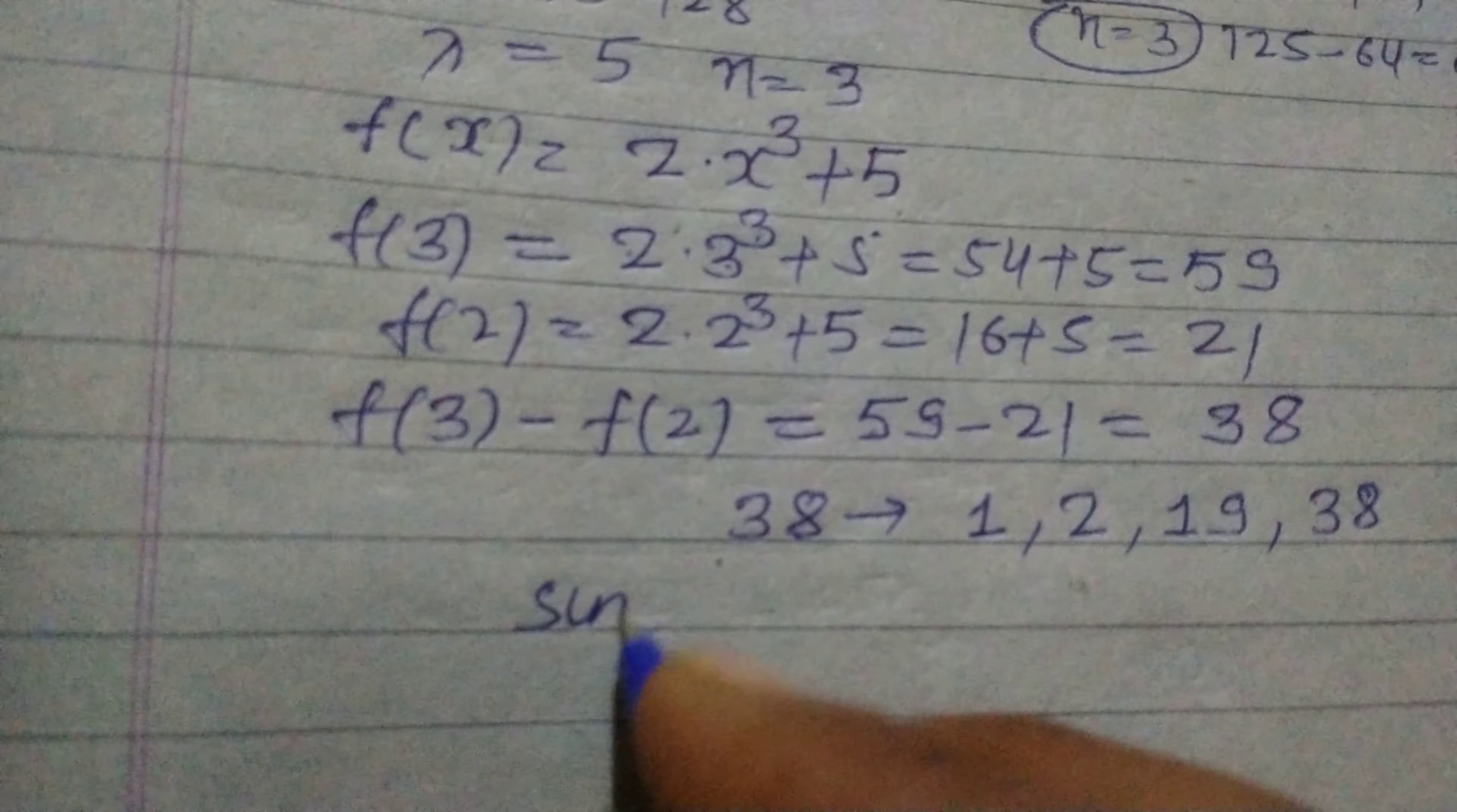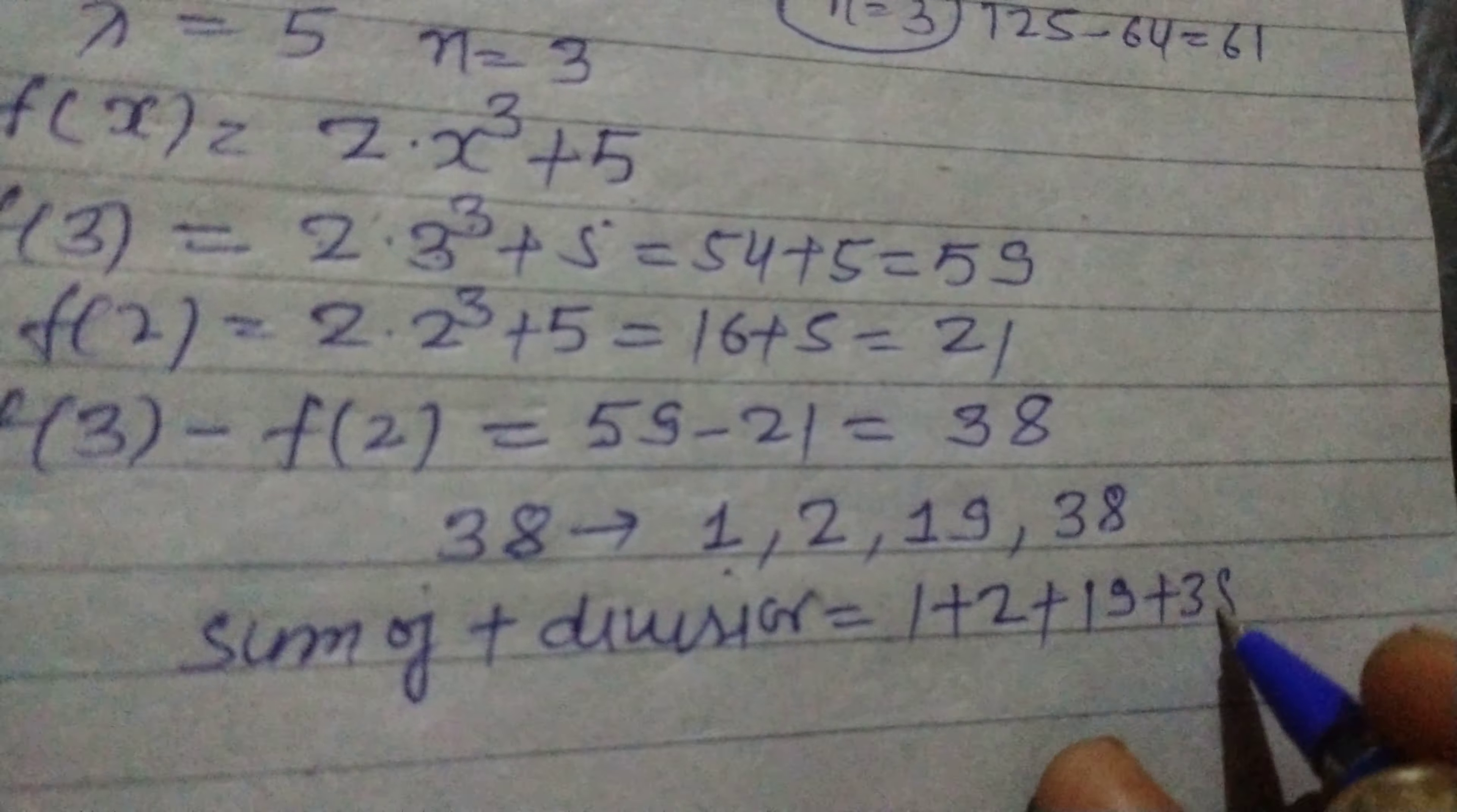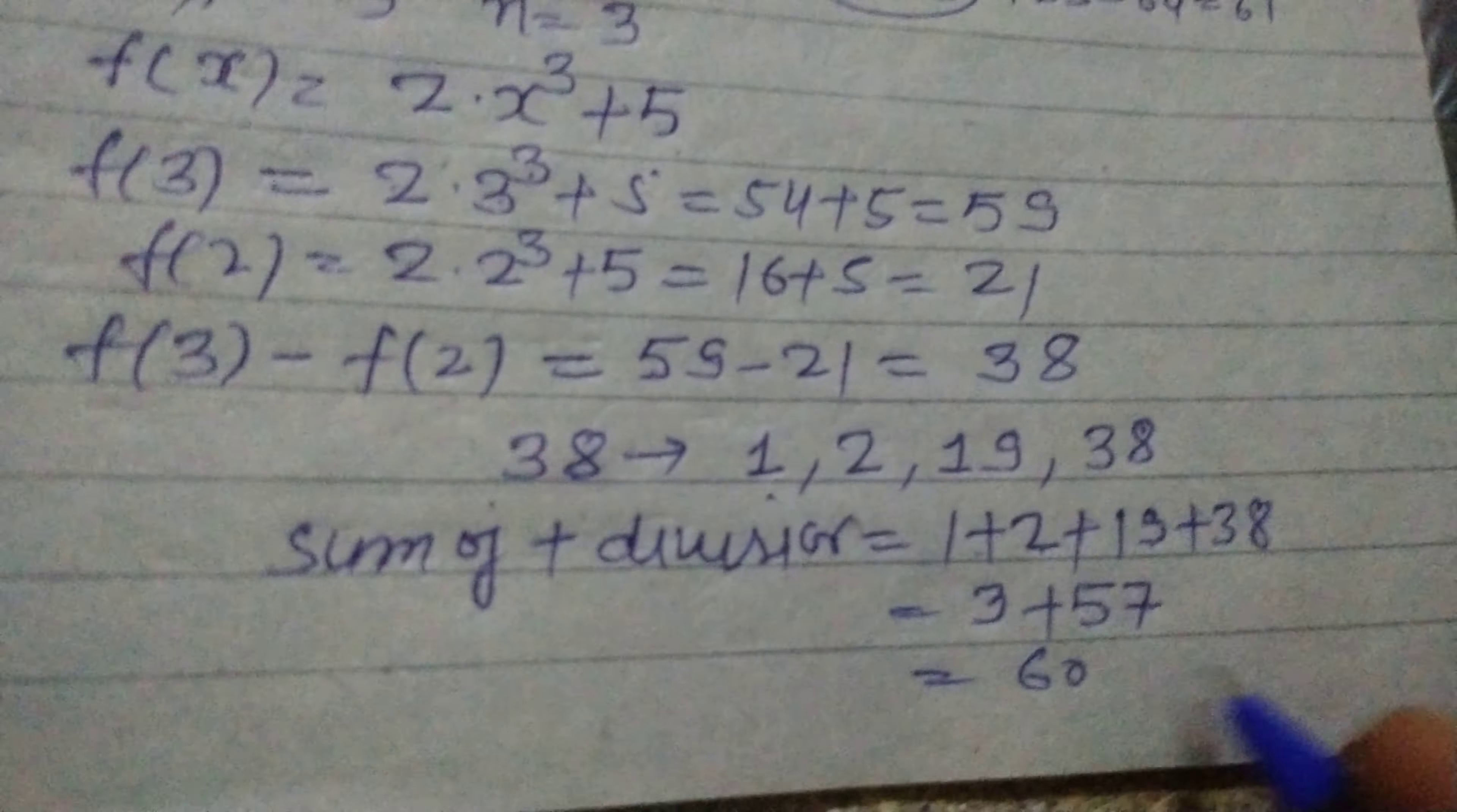So the sum of positive divisors is 1 + 2 + 19 + 38. So this is 3, 3 and 19 is 22, and 38, 22 + 38 = 60. 57 + 3 is 60.